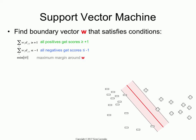Subject to those constraints, you try to maximize the separation between the positives and the negatives. And in an SVM, it turns out that is equivalent to minimizing the size of the weight vector. That's a condition that is complicated — there is no simple algorithm for solving it.